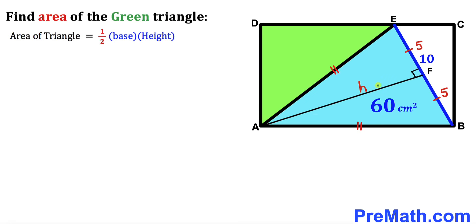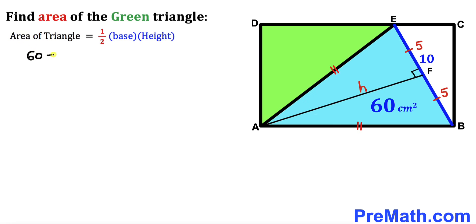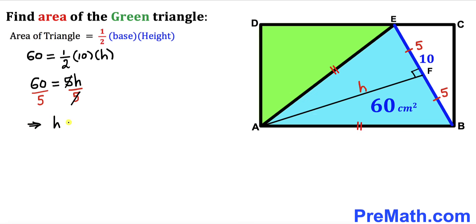Recalling the area of a triangle formula: Area = ½ × base × height. For the blue triangle, the base is 10 cm, the height is h, and the area is 60 cm². So: 60 = ½ × 10 × h, which gives 60 = 5h. Dividing both sides by 5, our height h equals 12 cm.